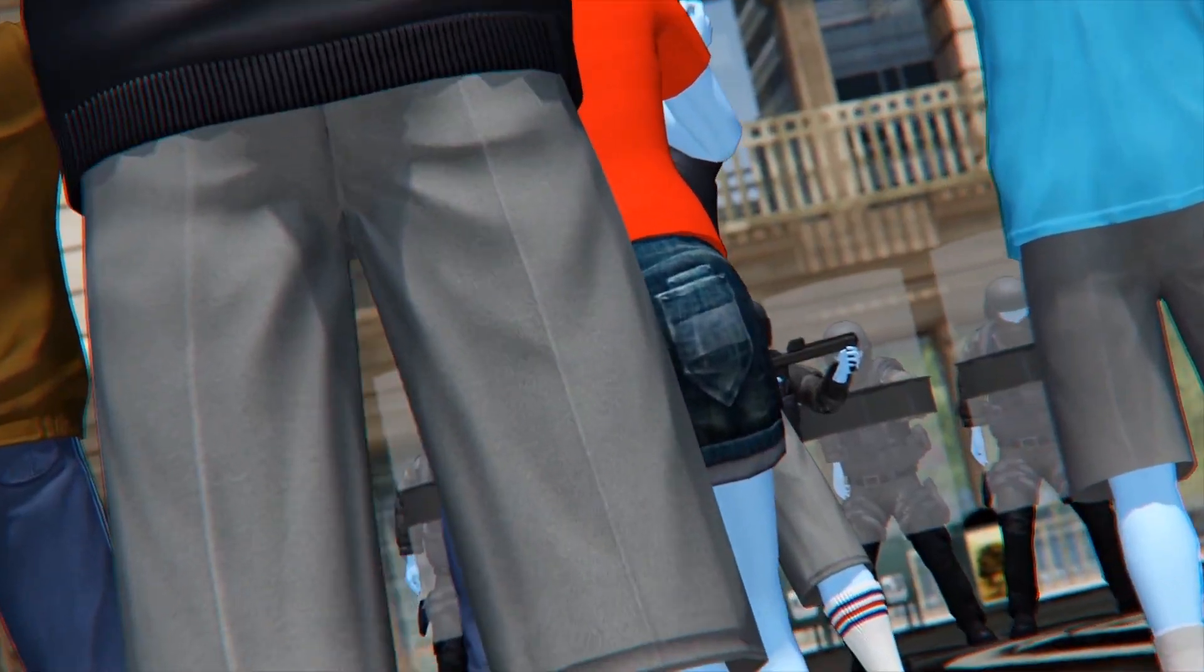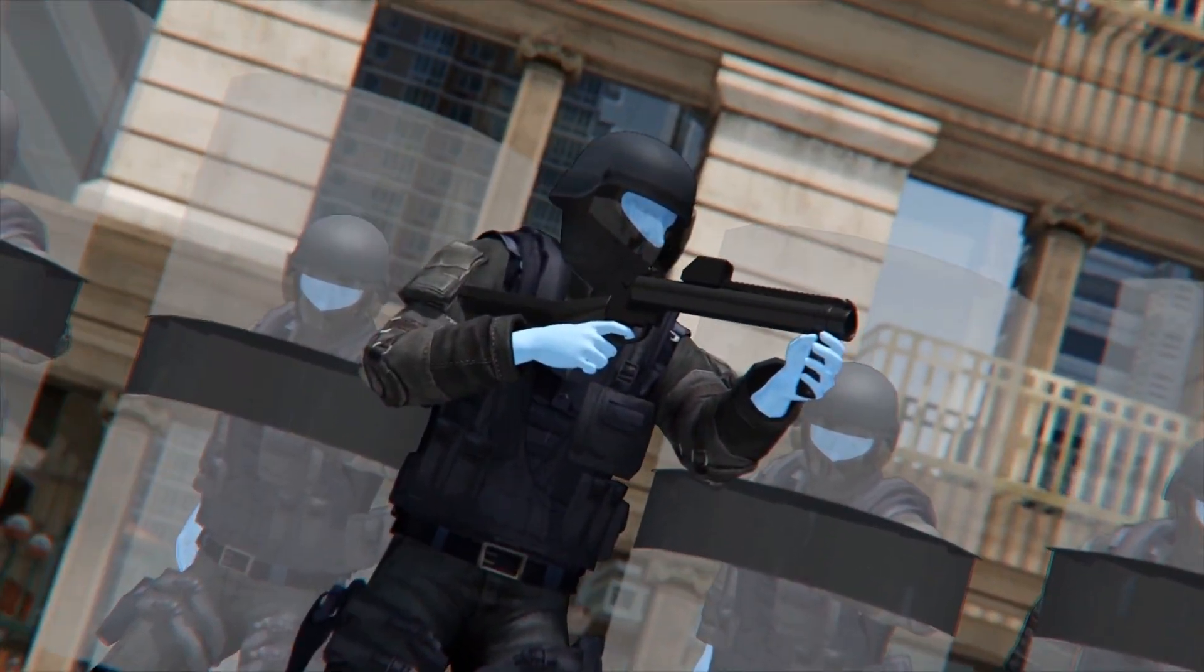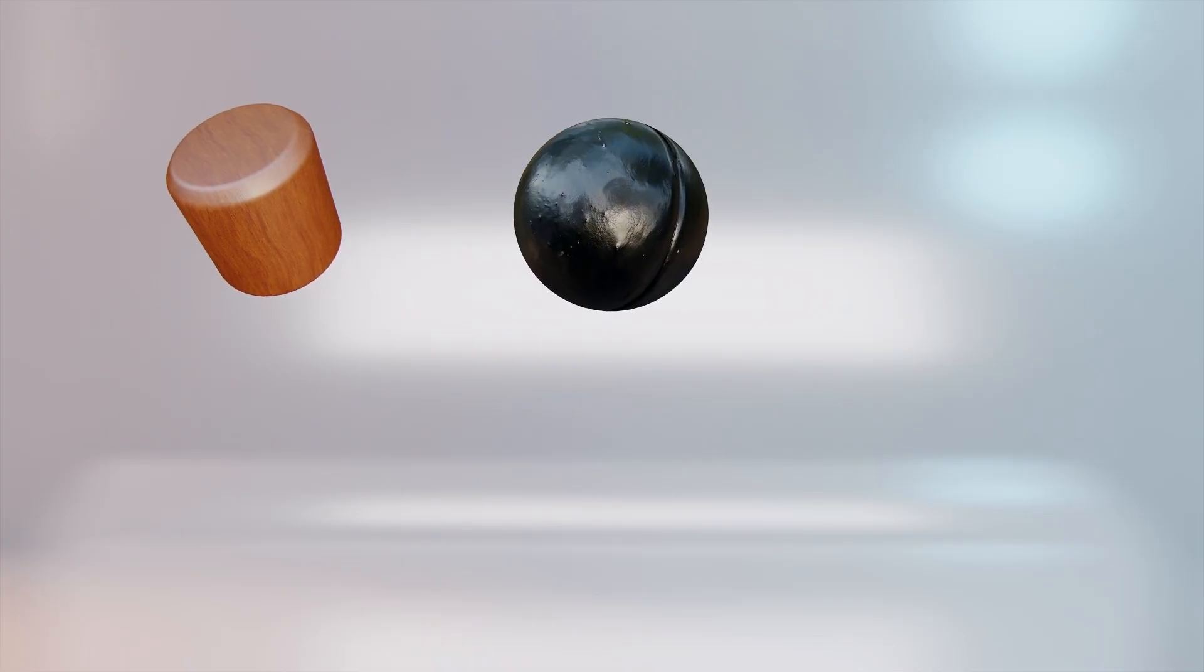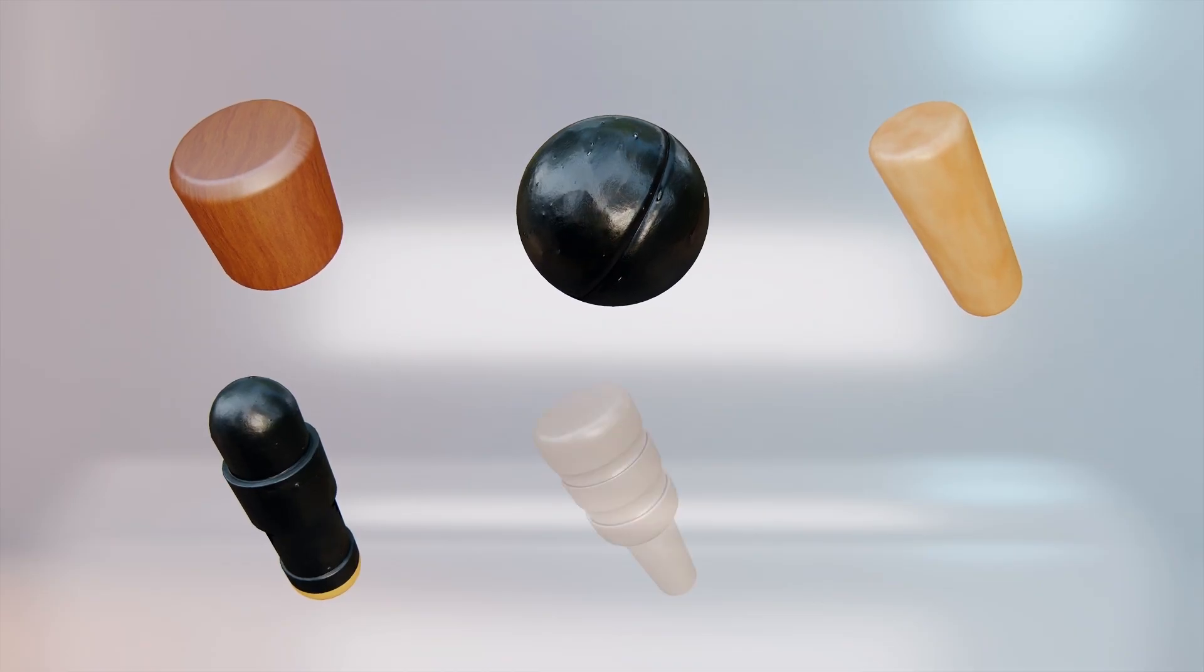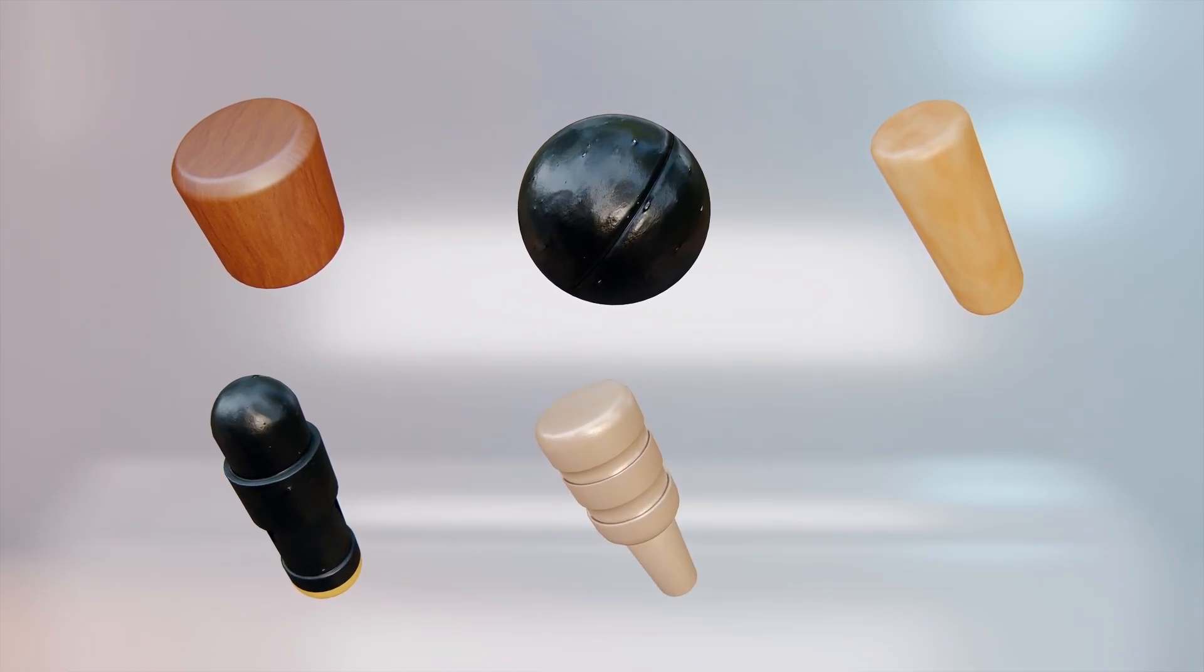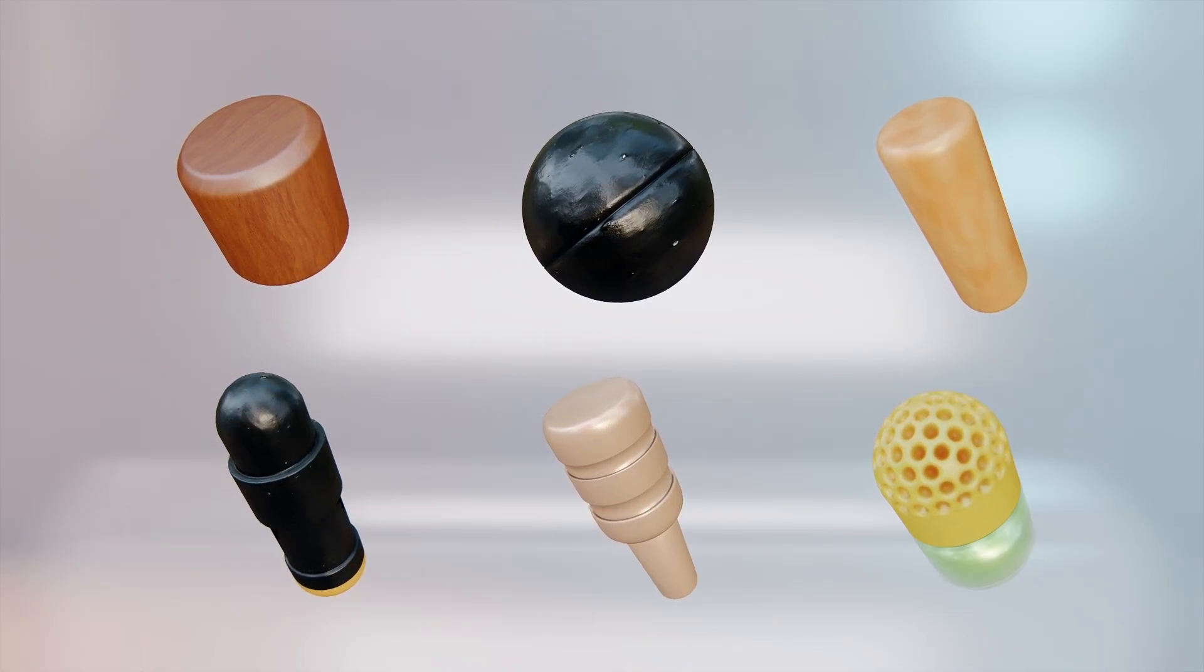Rubber bullets fall under the category of kinetic impact projectiles that are used for crowd control purposes by law enforcement. According to a 2016 report by Physicians for Human Rights and the International Network of Civil Liberties Organizations, rubber bullets can be spherical or cylindrical and can be made of hard rubber, plastic or PVC. They can also be fired as single shots or in groups of multiple projectiles within a cartridge.